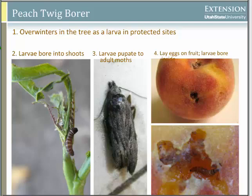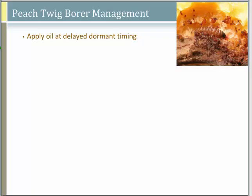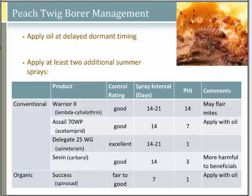To deal with peach twig borer, oil at the delayed dormant timing helps because larvae are overwintering in the tree and oil will suffocate some of them. An insecticide applied at the timing when egg hatch begins is also required at high-population sites — we can give exact dates for when treatments should be made. The options are very similar to those for codling moth. Delegate can be used for many different pests on different crops, lasts about 21 days, and has a pre-harvest interval of one day.